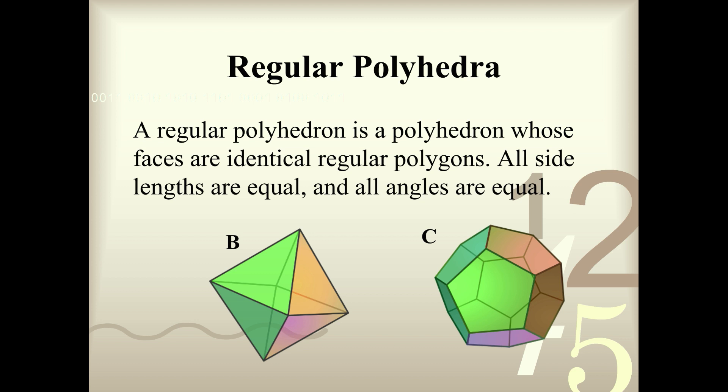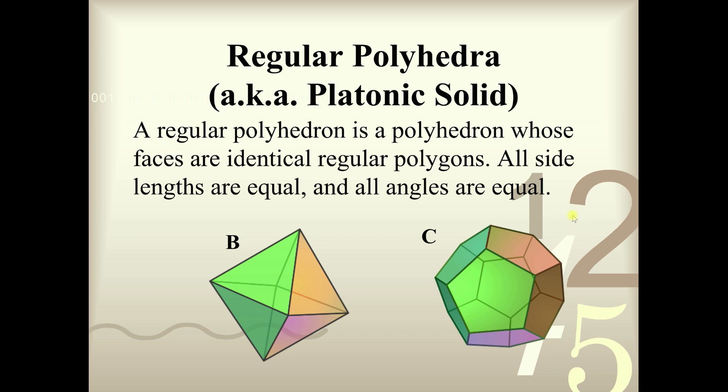Another name for regular polyhedra is platonic solids, because we give credit to Plato who came up with this. He stated that there are only five platonic solids in Euclidean geometry — and he's actually right. In this lesson, we'll figure out which ones are these five platonic solids, and why there are only five.